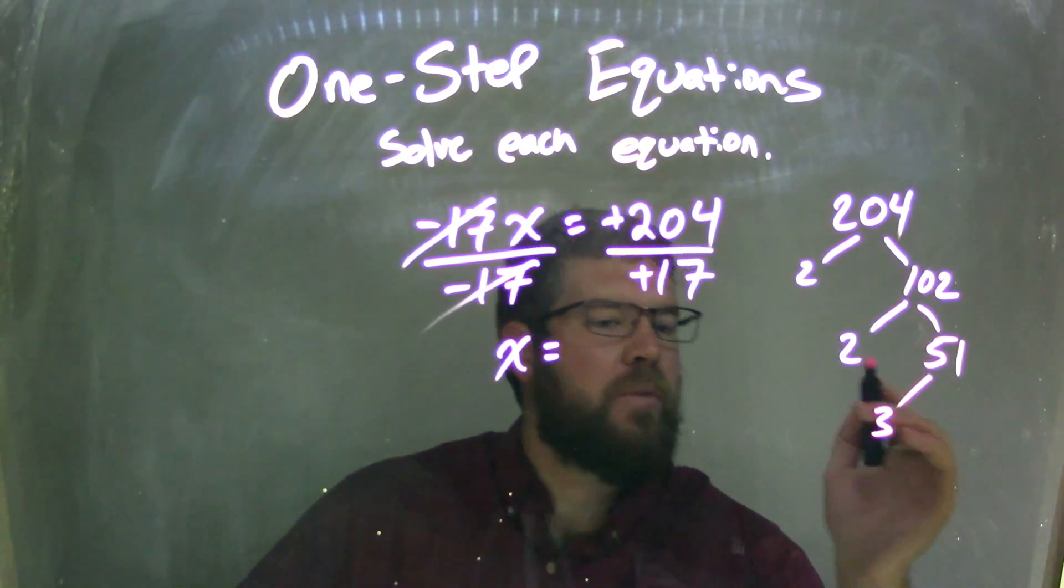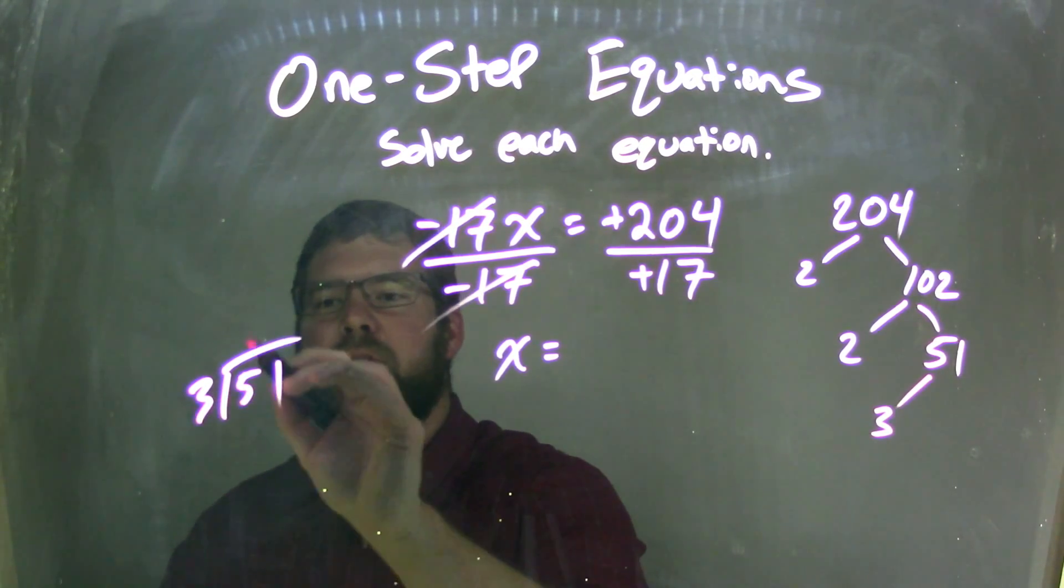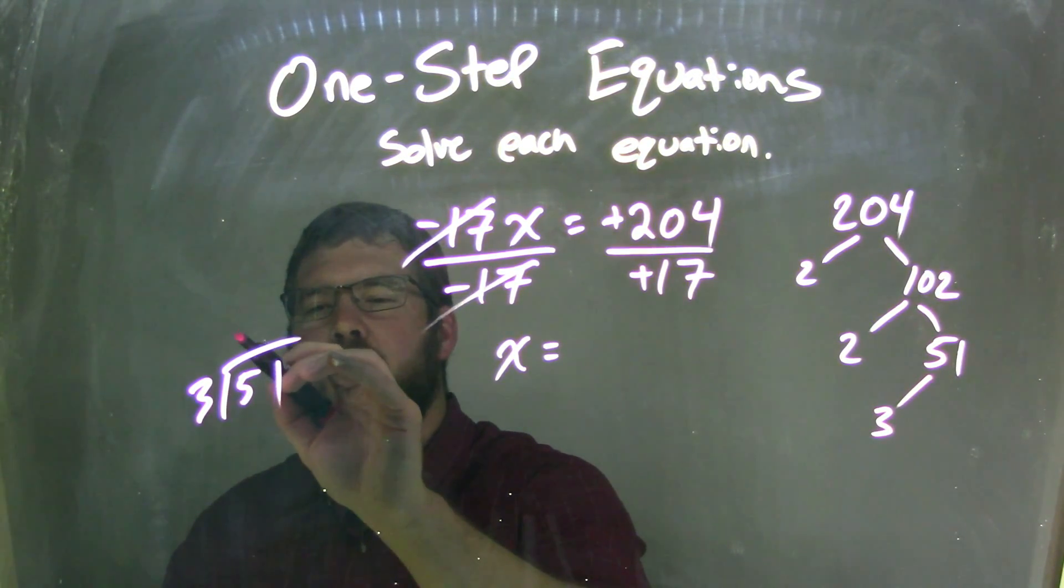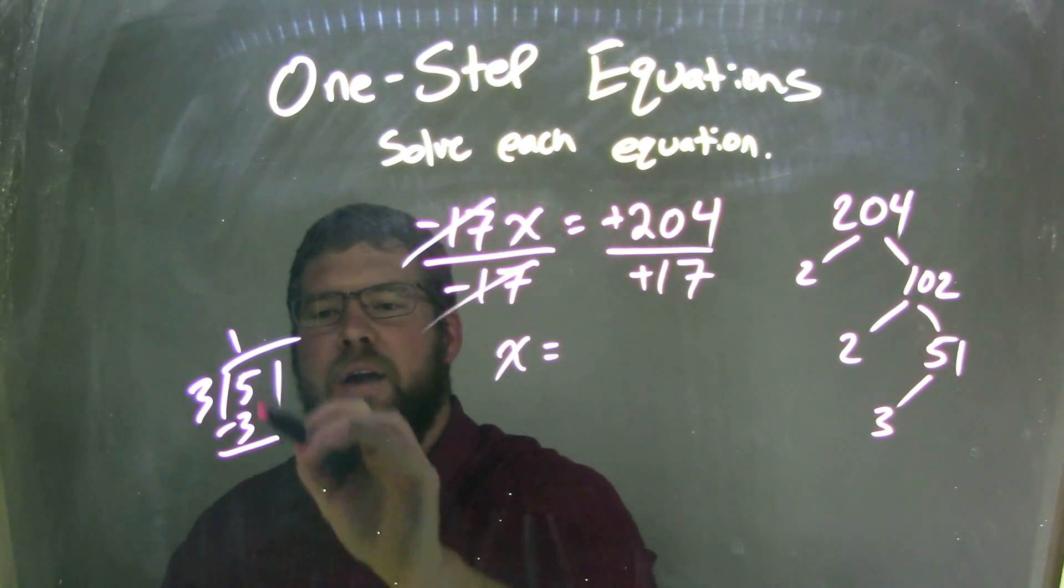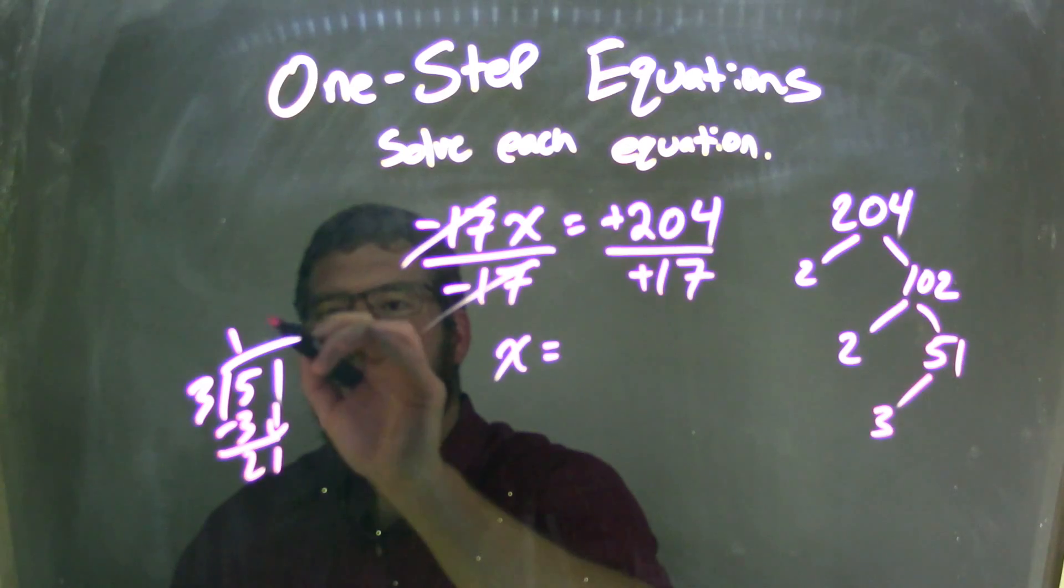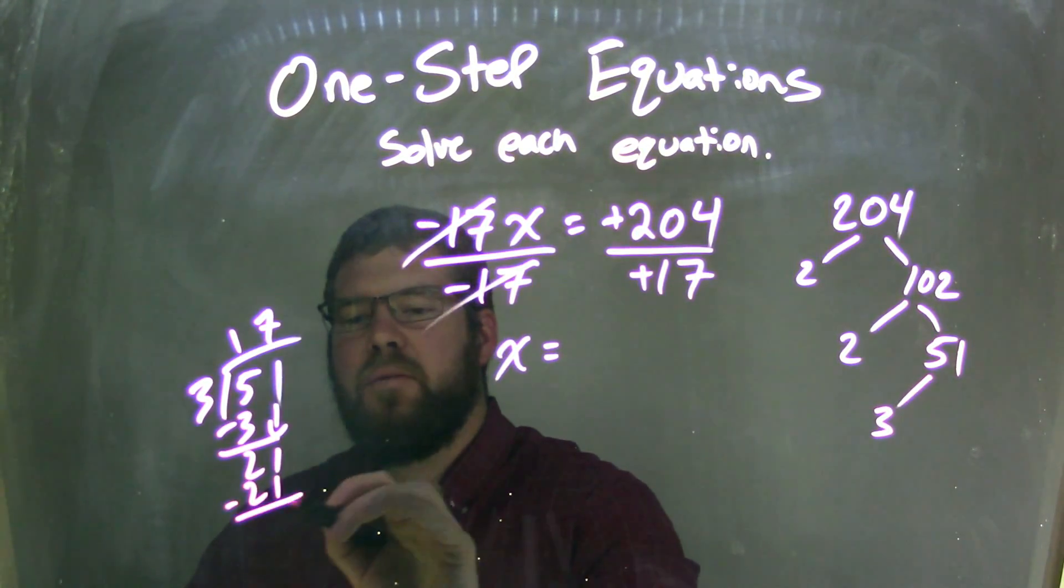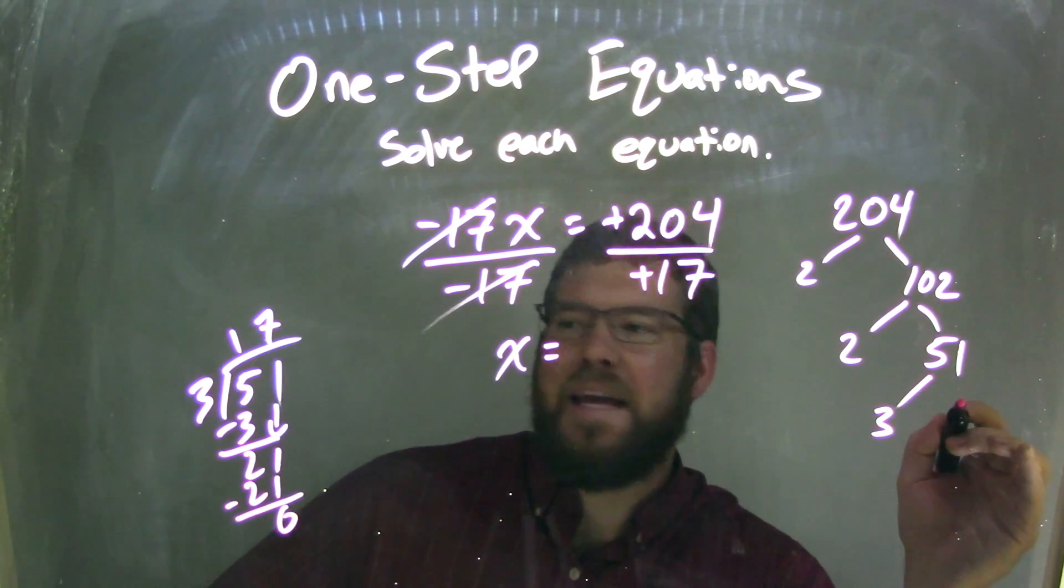So 3, if you don't know, 3 goes into 51, we can do it right here. 3 goes into 5, 1 time. Subtract them, we get 2, bring down the 1, and then 3 goes into 21, 7 times. There we go, 7 times 3 is 21, we're done. So 3 and 17.